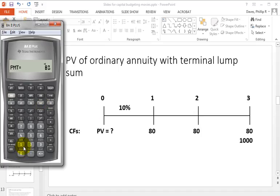The payment is 80. And the future value, that would be the lump sum in addition to that last $80. The lump sum is $1,000, and that's our future value.